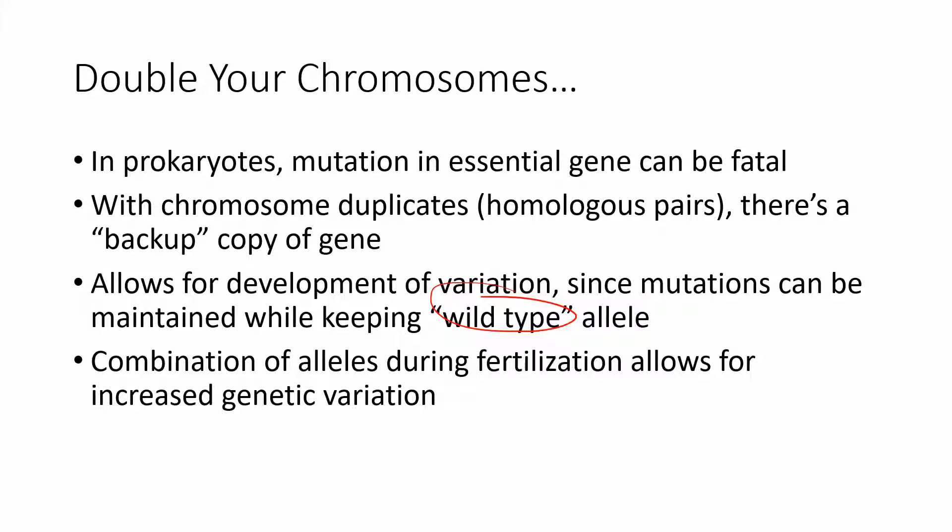This allows mutations to happen without necessarily killing an organism. You can also have different variants of a trait. For example, in different environments you might find an advantage to blonde hair versus brown hair. If you have multiple copies of a gene, you can carry different traits in a population without destroying an organism. Combinations of different alleles increase genetic variation further — you can have heterozygotes, homozygotes, dominance and recessives, and so on.